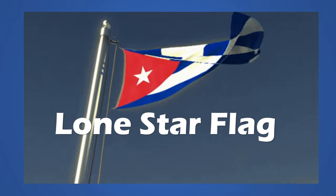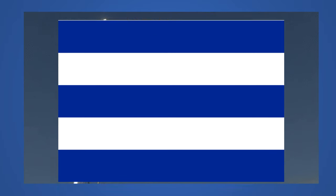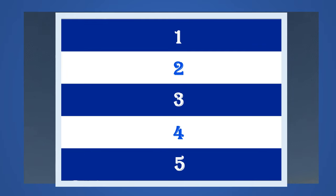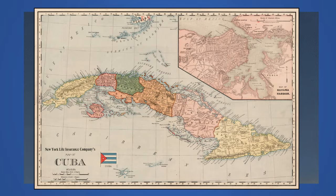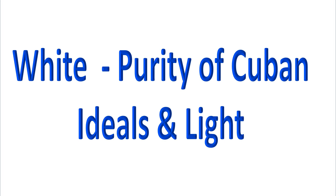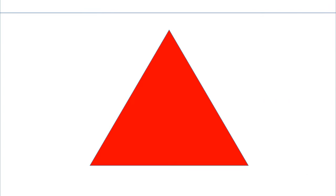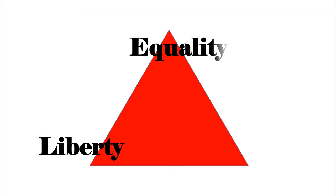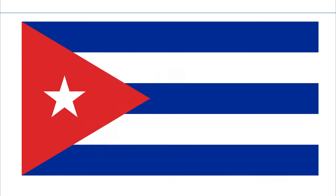Cuba's flag is called the Lone Star flag. It consists of five alternating stripes, three blue and two white. The three blue stripes represent Cuba's three departments at the time the flag was created. The white stands for purity of Cuban ideas and light. The red equilateral triangle at the hoist side represents three ideas: liberty, equality and fraternity.